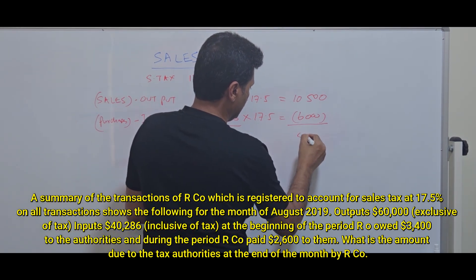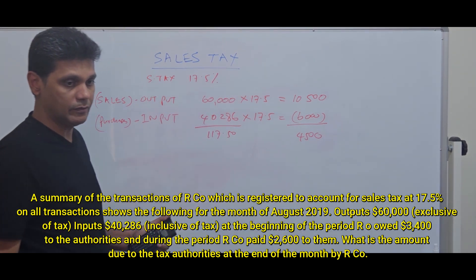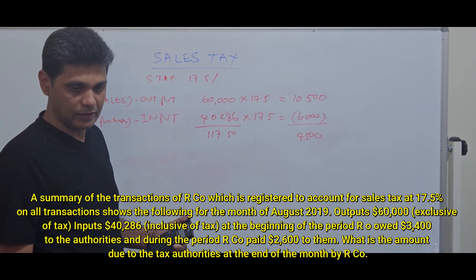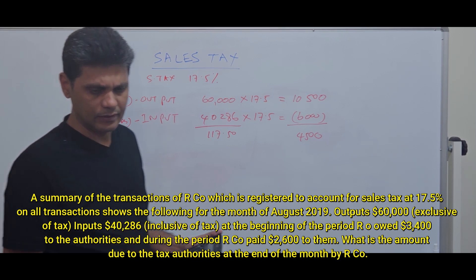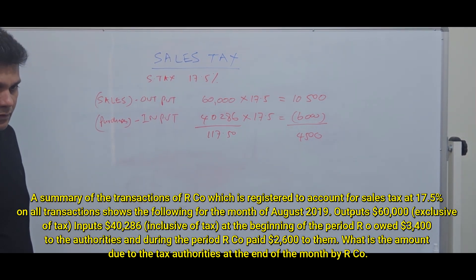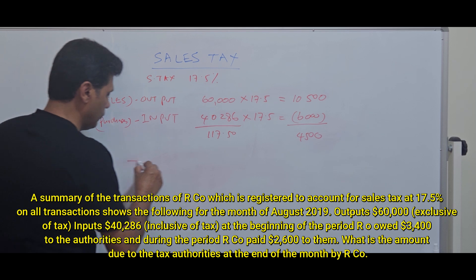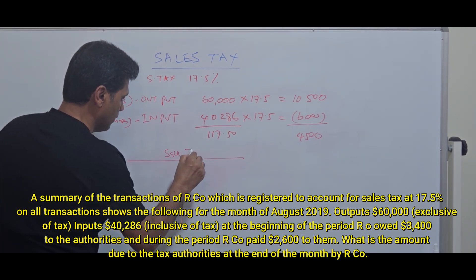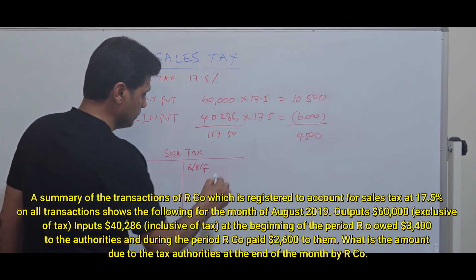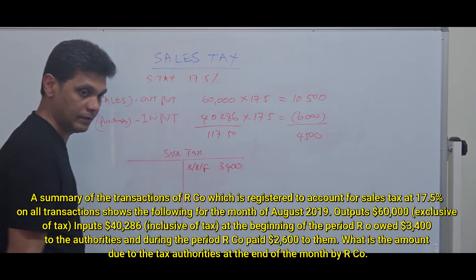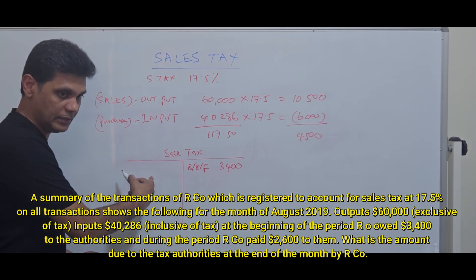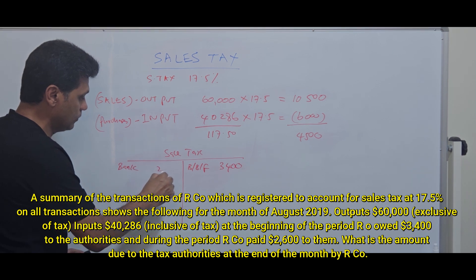Is there any continuation? Yes — they owe $3,400 at the beginning as an opening balance payable to tax authorities. During the period, they pay $2,600, so debit the sales tax account and credit bank for $2,600. The output tax of $10,500 is a payable, so credit $10,500. The input tax of $6,000 is receivable, so debit $6,000 on purchases.